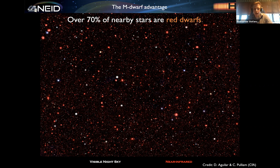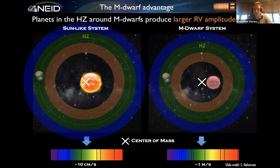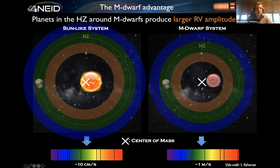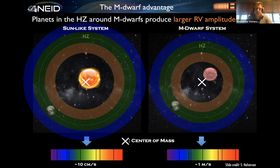Another great reason why M dwarfs are great targets to study small planets, especially with respect to habitability studies, is that we can actually detect planets in the habitable zones with current radial velocity precisions. In this cartoon, I'm comparing the habitable zone around a sun-like star on the left and around a mid-to-late M dwarf on the right. Because M dwarfs are intrinsically faint, the habitable zone is closer in to the host star. And because M dwarfs are relatively low mass, this increases the radial velocity semi-amplitude of a planet orbiting in the habitable zone, making it detectable with current technologies.